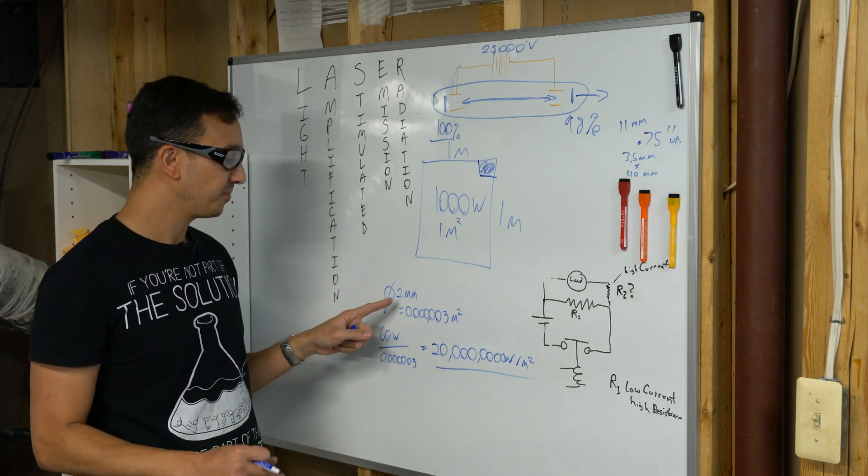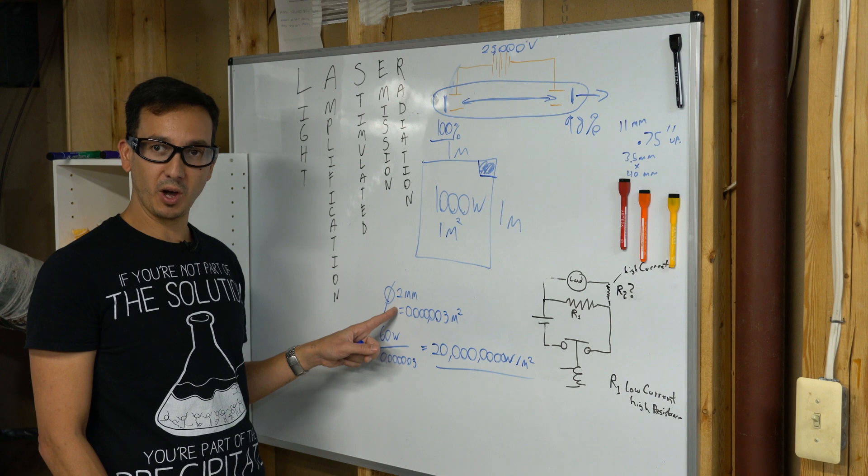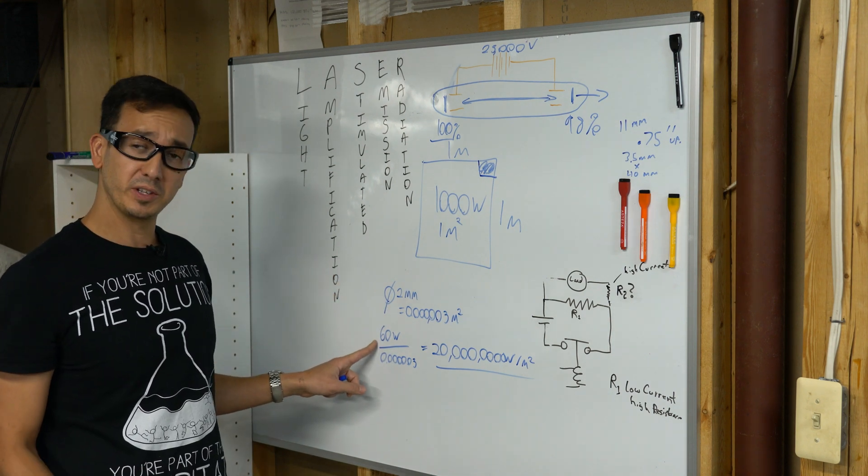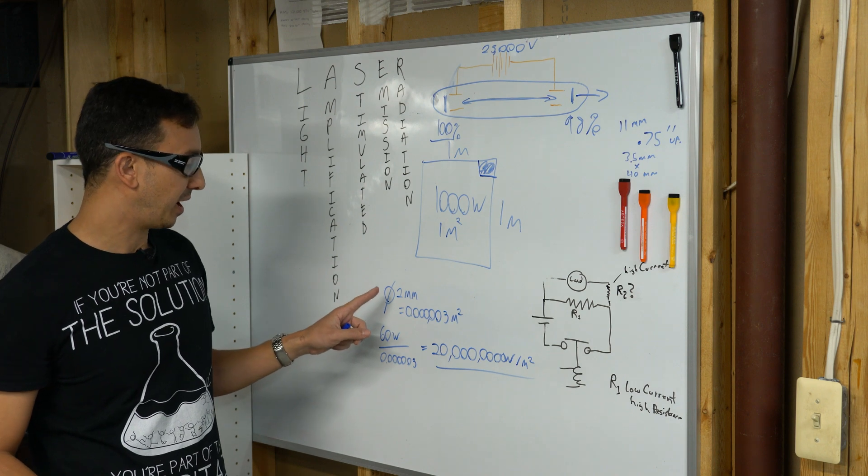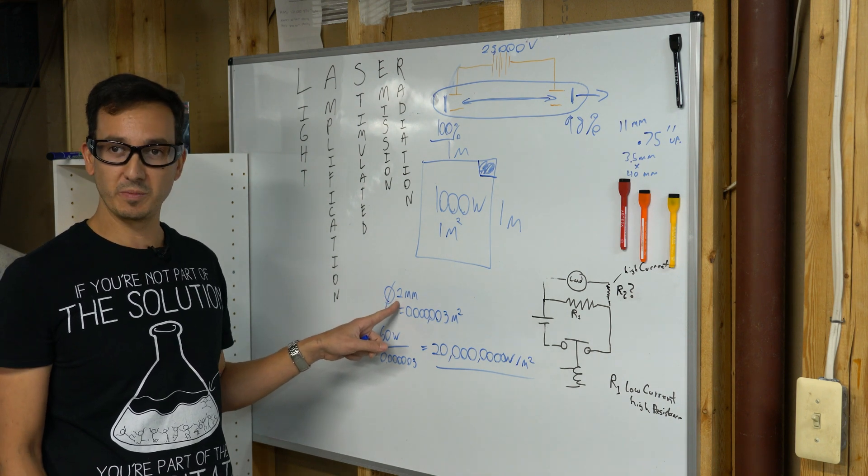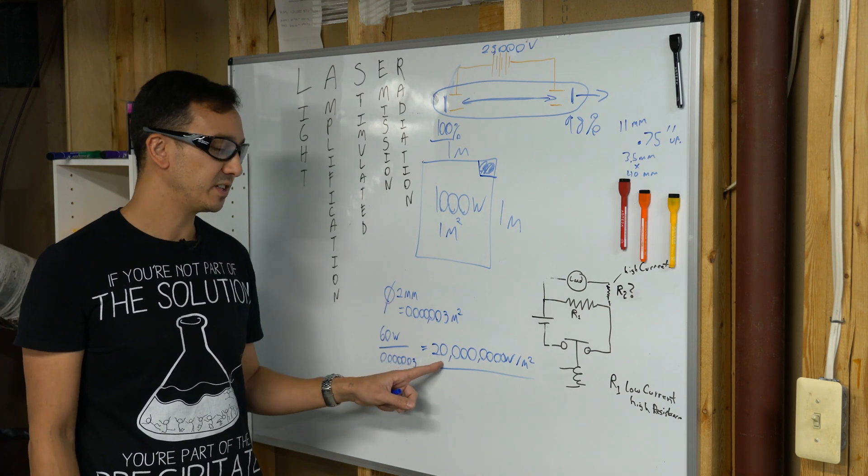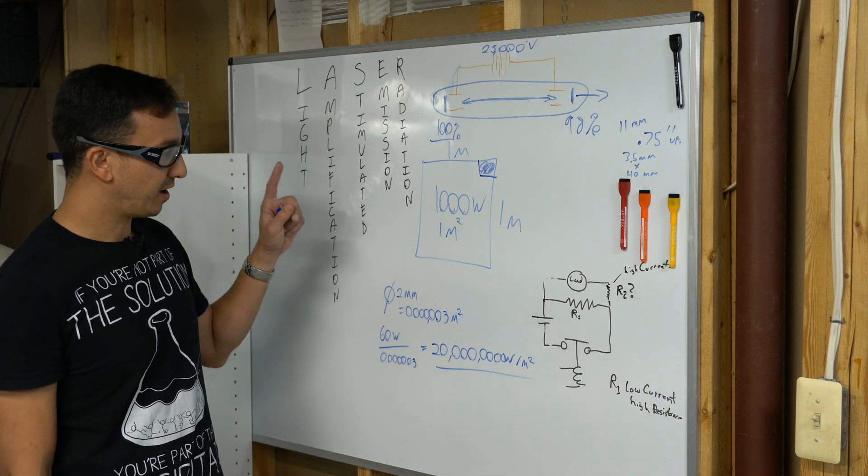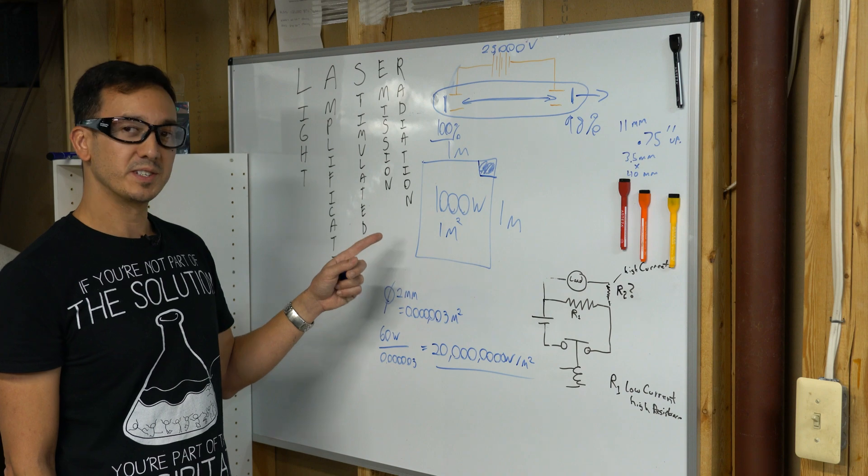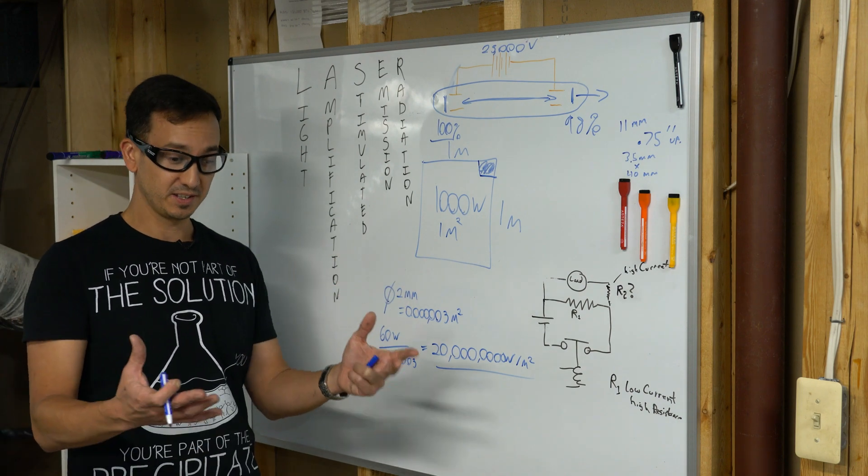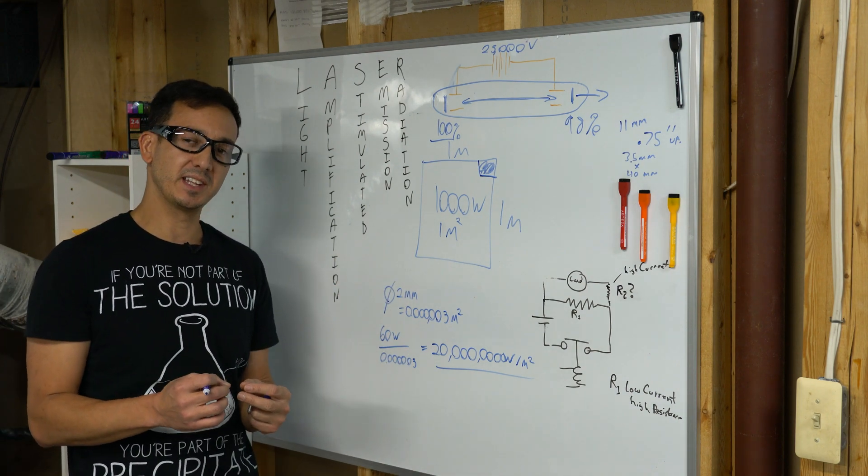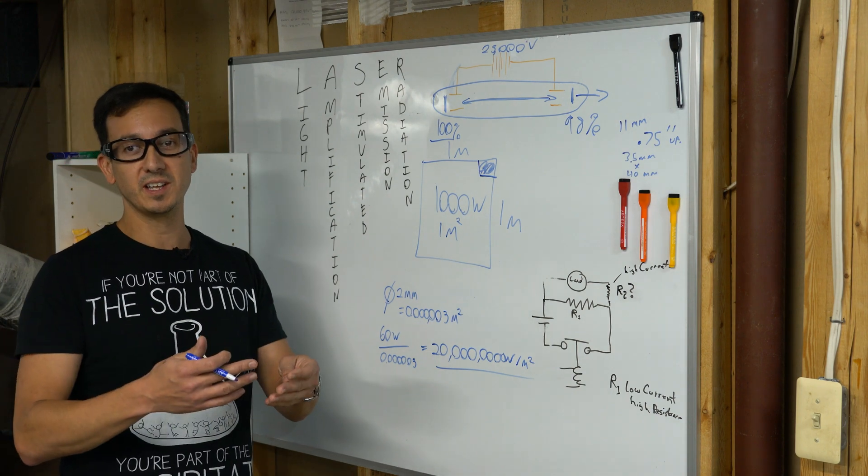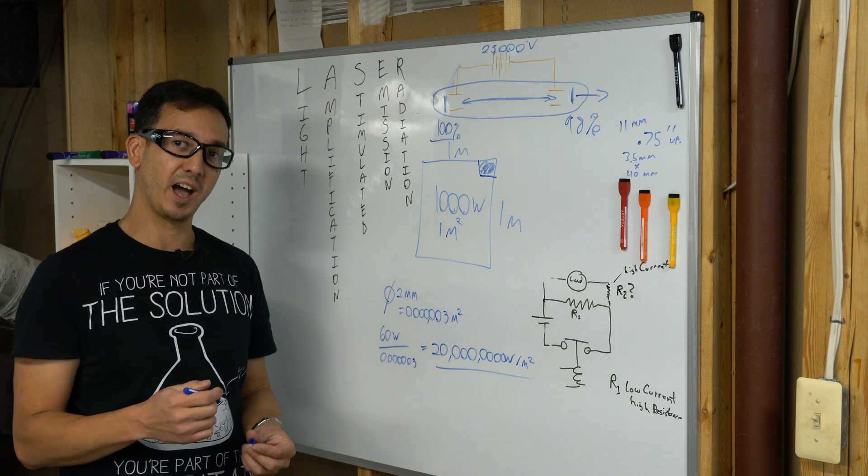The light from this laser is only a two millimeter spot. Now, the laser is 60 watts, but if we divide 60 watts by the area of a two millimeter dot, we get 20 million watts per square meter. In other words, we have 2,000 times more power density than the sun on Earth. And it's the power density that makes it possible to melt and weld and cut things. And when we focus it, we get power densities that are even higher.